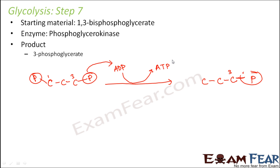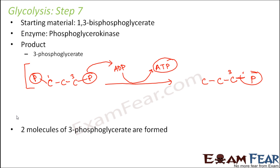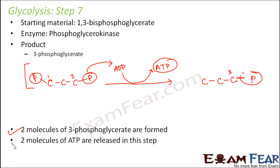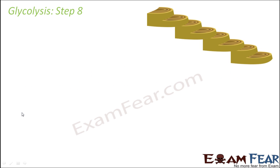Importantly, ATP is produced in this step. Since step 6 produced two molecules of bisphosphoglycerate, step 7 is repeated for both molecules. Therefore, two molecules of 3-phosphoglycerate are formed and two molecules of ATP are produced.